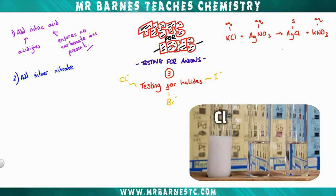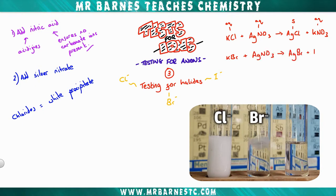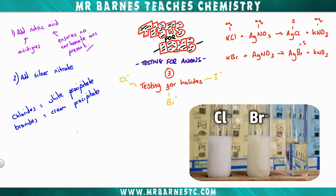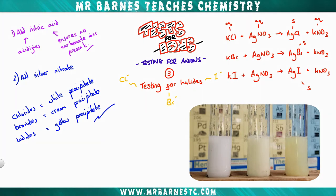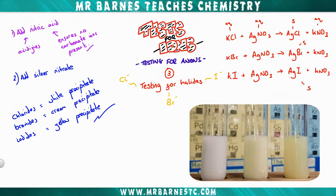Now if you have a chloride it will make a white precipitate. If you have a bromide and you make silver bromide, your precipitate will be cream. And then finally if you have an iodide and you add silver nitrate you'll get silver iodide and that will give you a yellow precipitate, as you can see in the bottom right here. So in summary: chlorides give you a white precipitate, bromides a cream precipitate, and iodide a yellow precipitate.